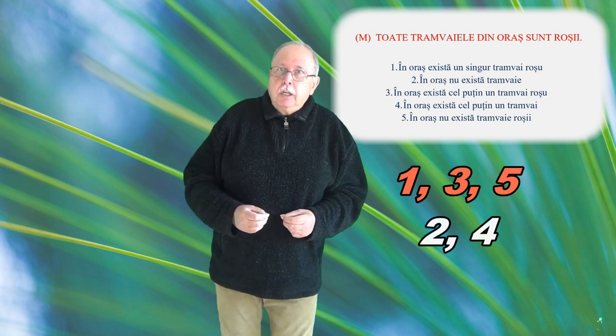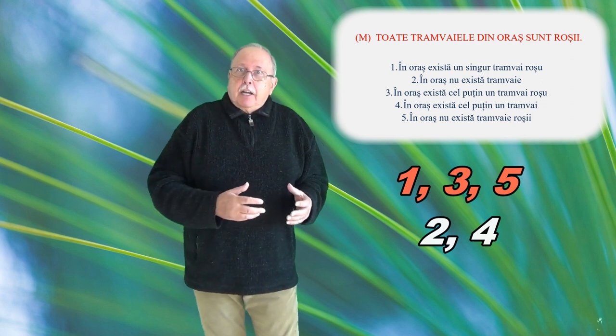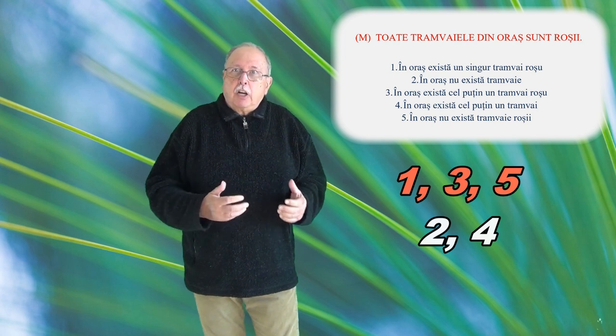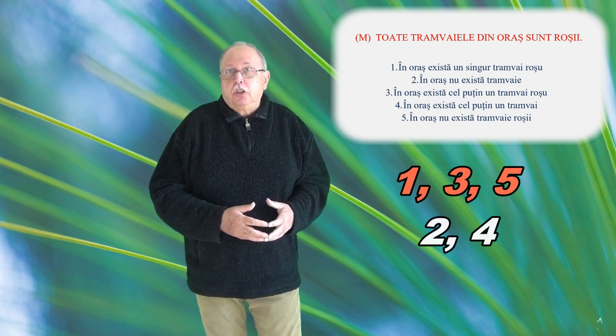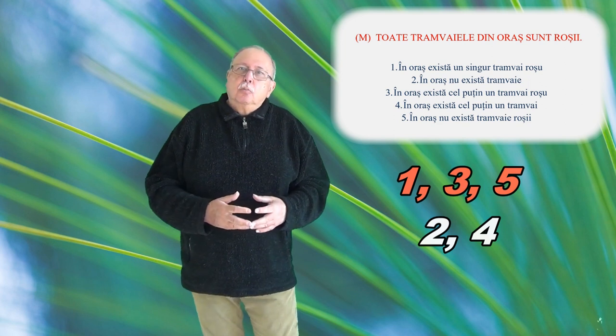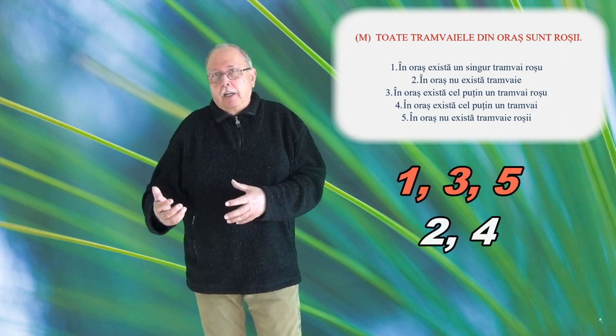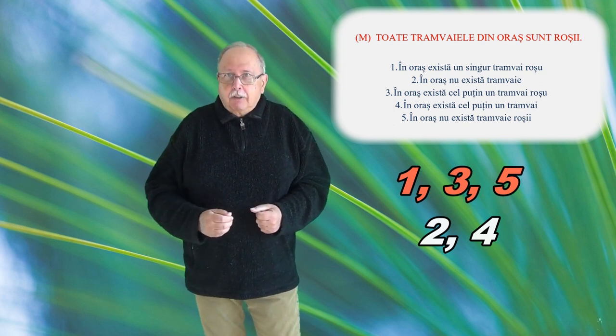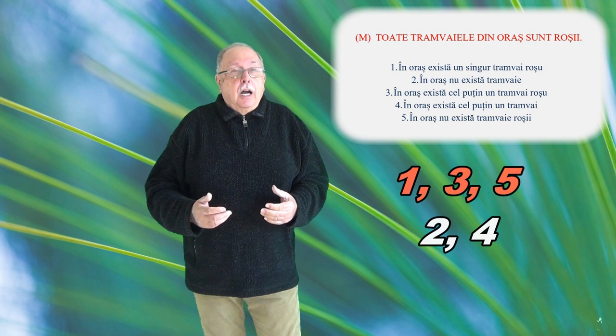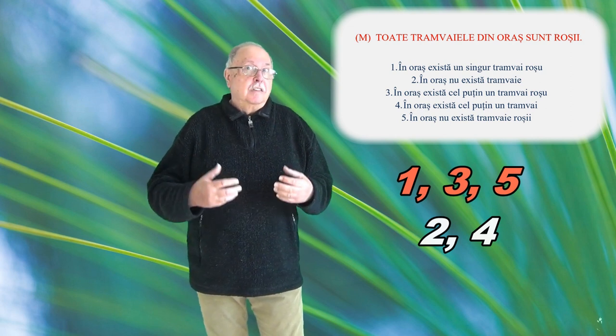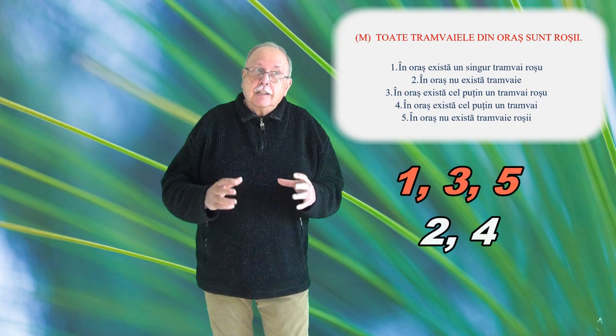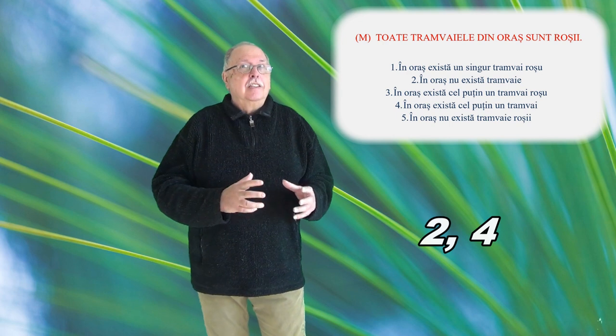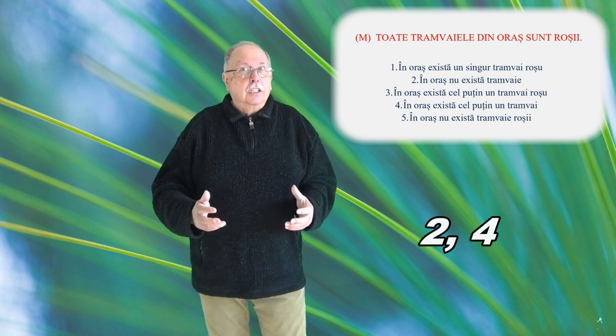5. În oraș nu există tramvaie roșii. Pot să existe tramvaie roșii în oraș și M să fie totuși o minciună. De pildă, în oraș pot fi 30 de tramvaie roșii și două albastre. Deci nu putem fi siguri că în oraș nu există tramvaie roșii, așa că nici 5 nu este cu siguranță adevărată. Înseamnă că afirmația pe care o căutăm, afirmația cu siguranță adevărată, este una din cealaltă categorie, cea care are legătură cu existența sau non-existența tramvaielor în oraș.